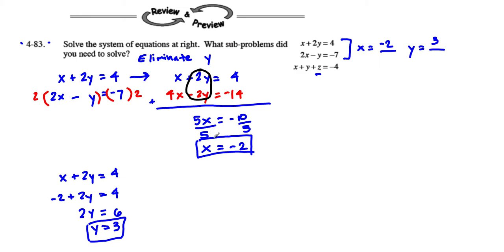Notice we can check it by plugging them into the other equation to make sure they work. Let's see here. We have 2 times negative 2. This is my check. 2 times negative 2 minus 3 should equal negative 7. 2 times negative 2 is negative 4. Negative 4 minus 3 equals negative 7. Negative 7 equals negative 7. So I know I'm right. So I know that this is correct.